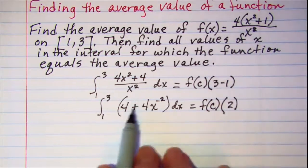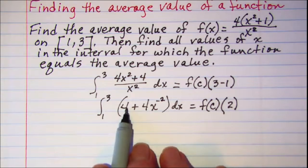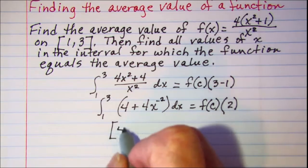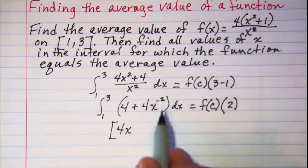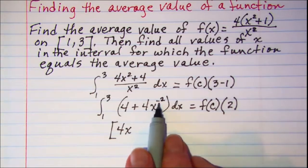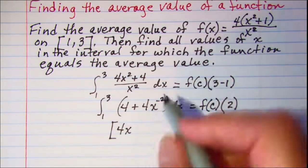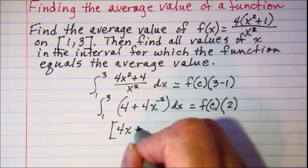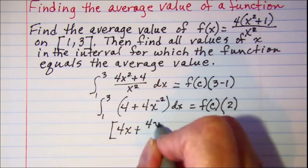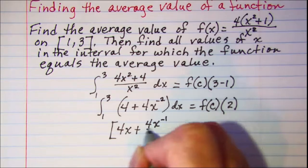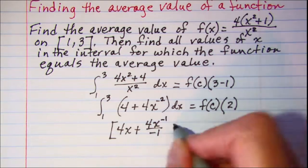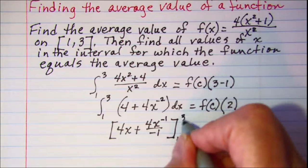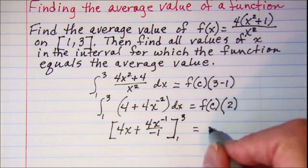Now when we integrate here we get 4x and then increase our exponent by 1 and divide by the new exponent. So that will give me 4x to the negative 1 divided by negative 1 evaluated from 1 to 3. Let me just copy this.